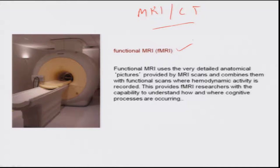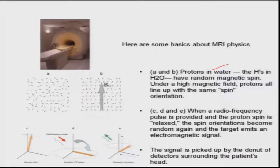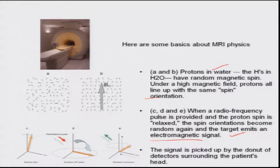Functional MRI creates very detailed anatomical pictures provided by MRI when a task is given and blood flow changes. You put the person in a magnetic field and give a task. The protons in water have a random magnetic spin; once you put them in a field they all orient. When a radio frequency pulse is provided the proton spin changes, it goes back, and the electromagnetic signal released during relaxation is picked up by the donut of detectors.